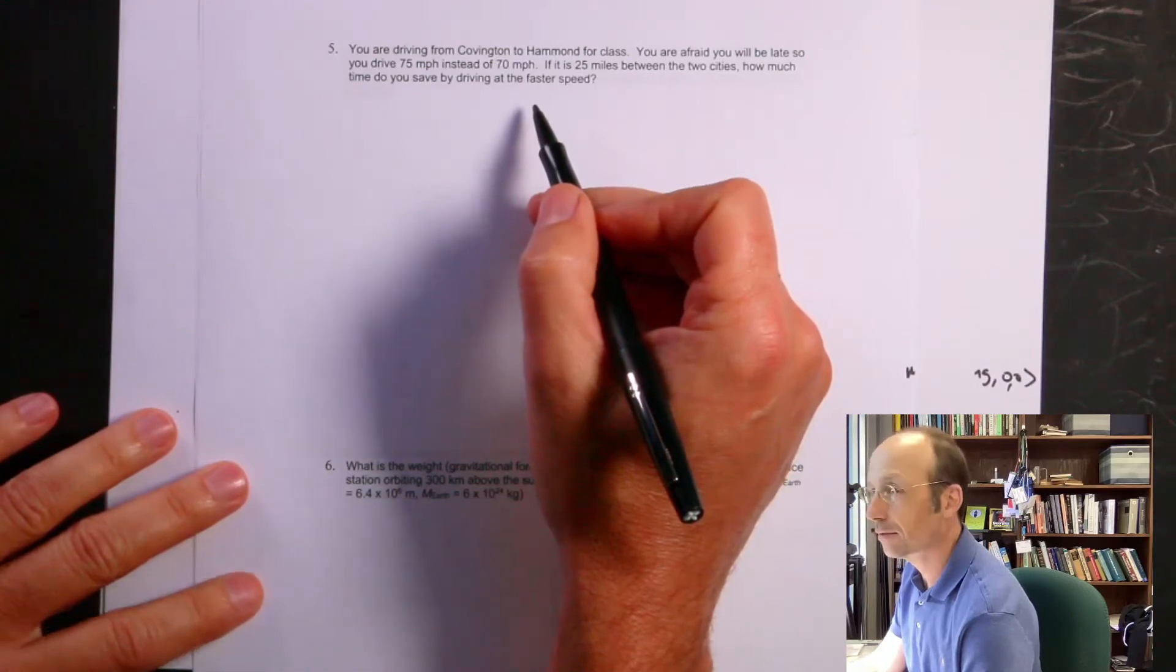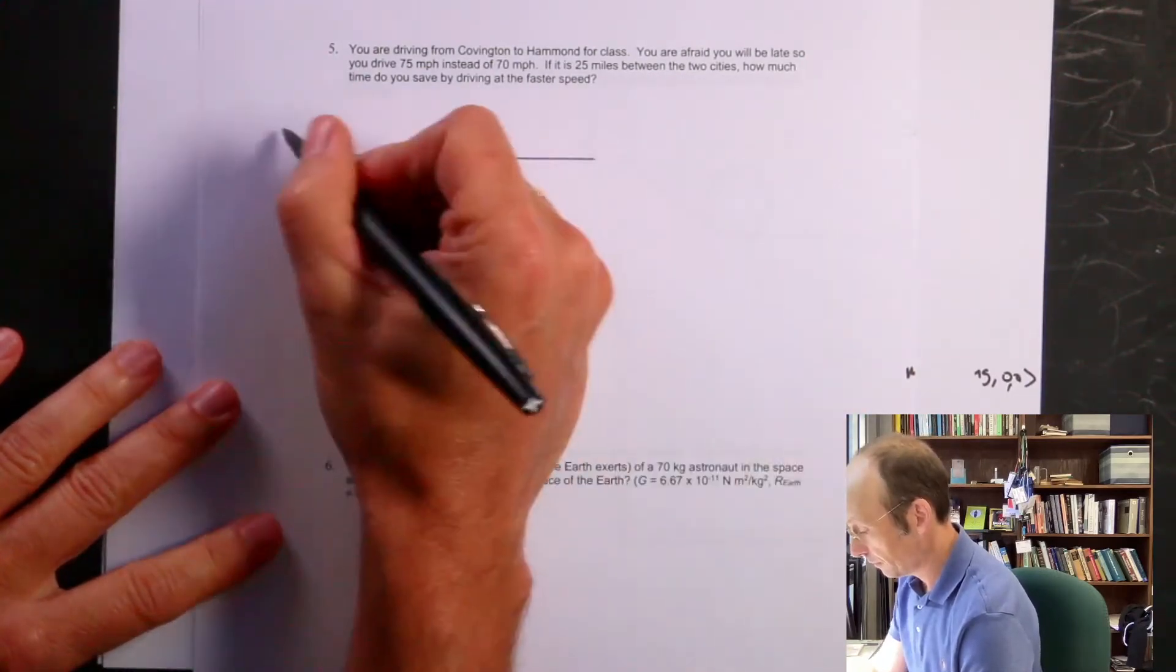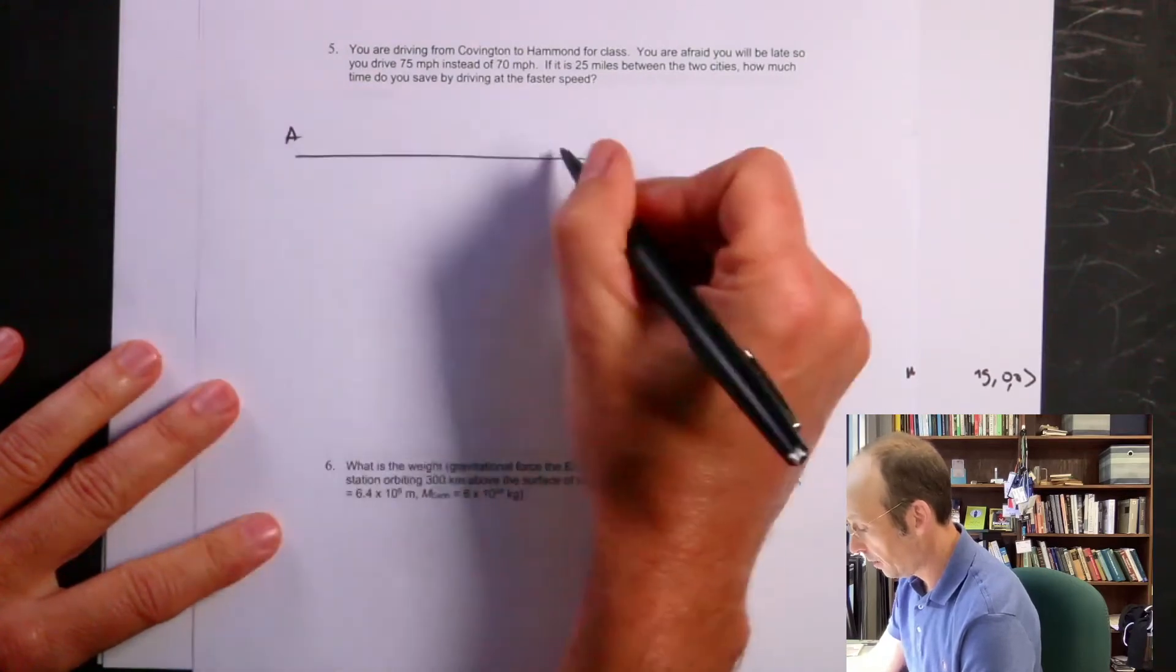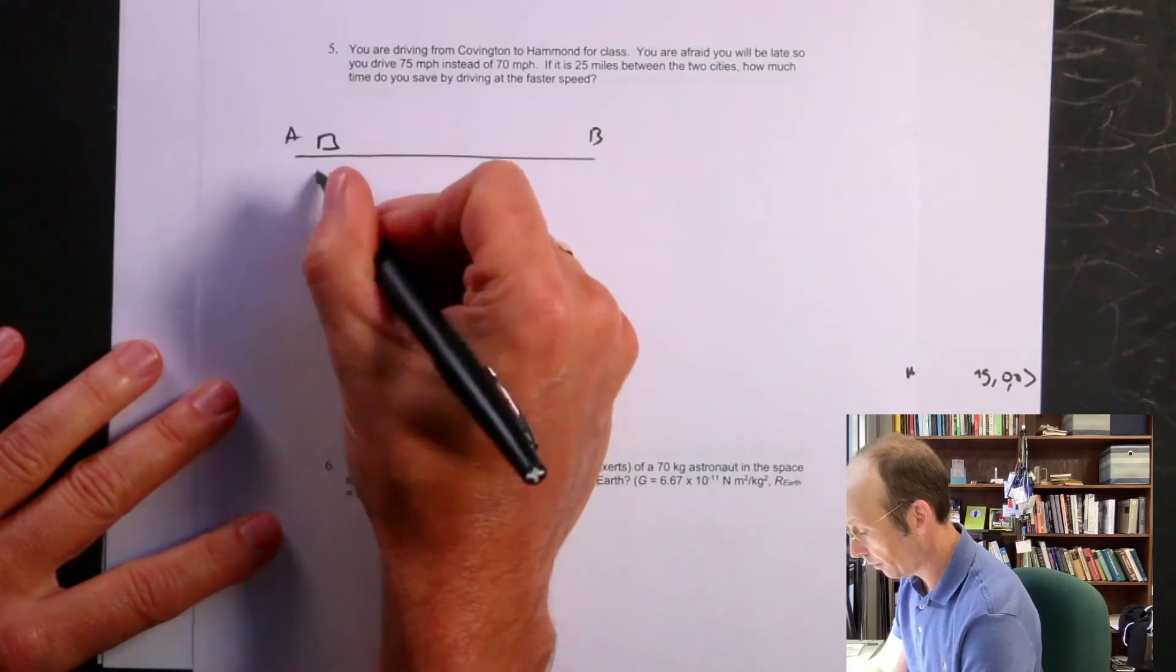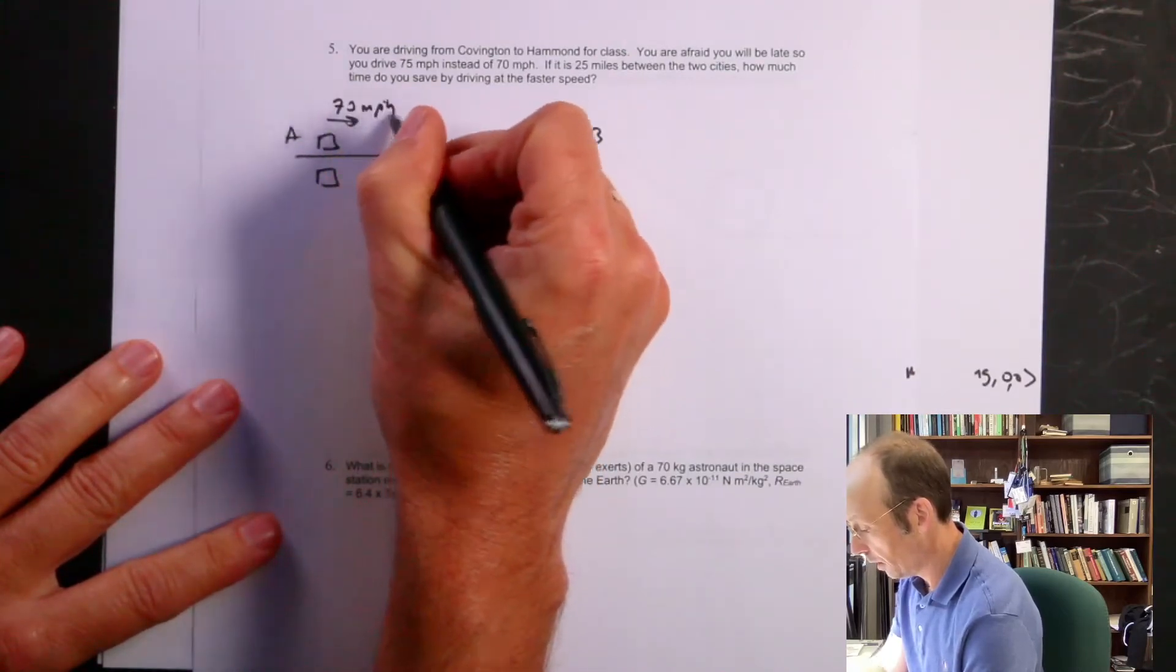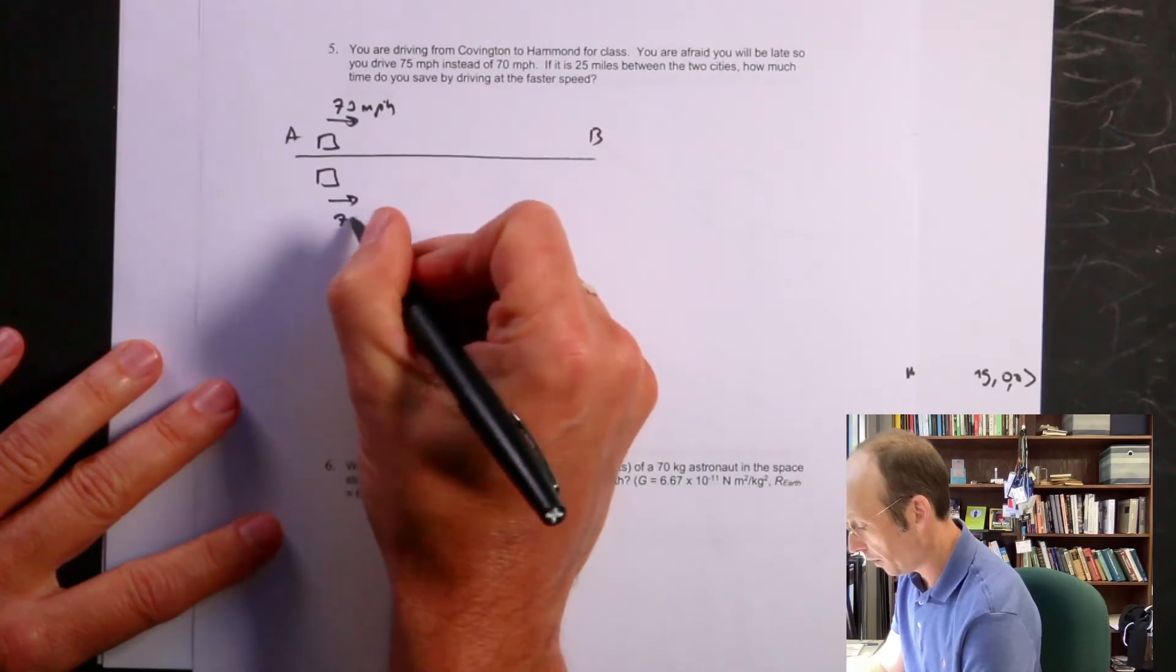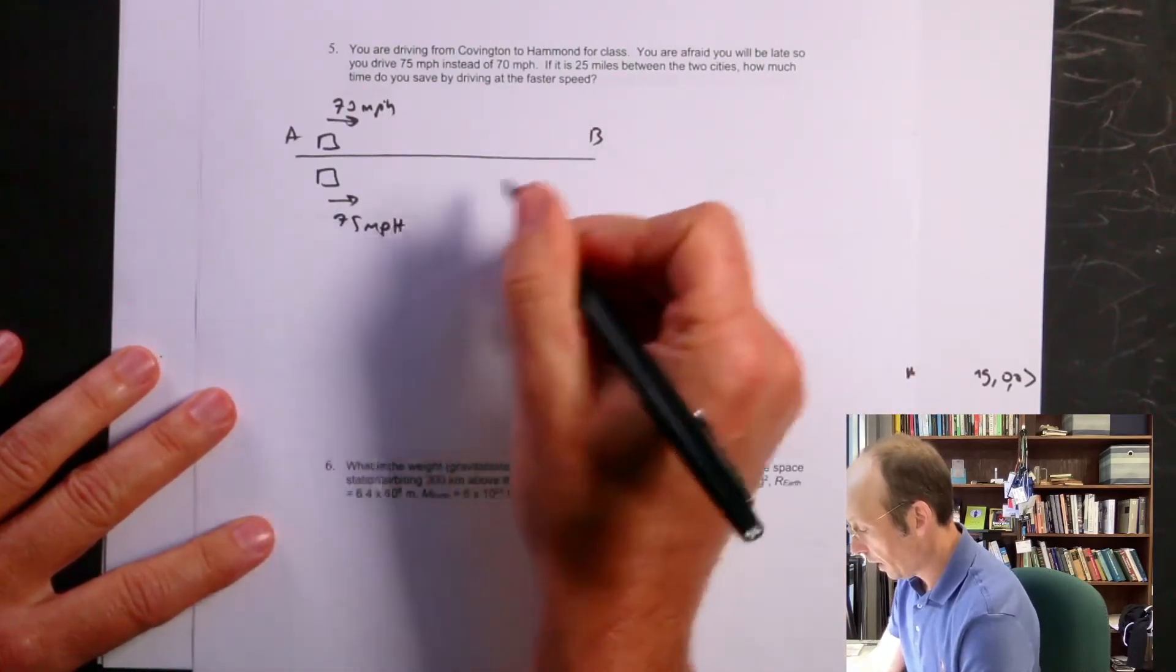I like this question. Okay, so let's just start off right here. Let's call this A, B, and there's your car, and here's another car. So this one's going 70 miles per hour, and this one's going 75 miles per hour. So, miles per hour. And I want to find the time.